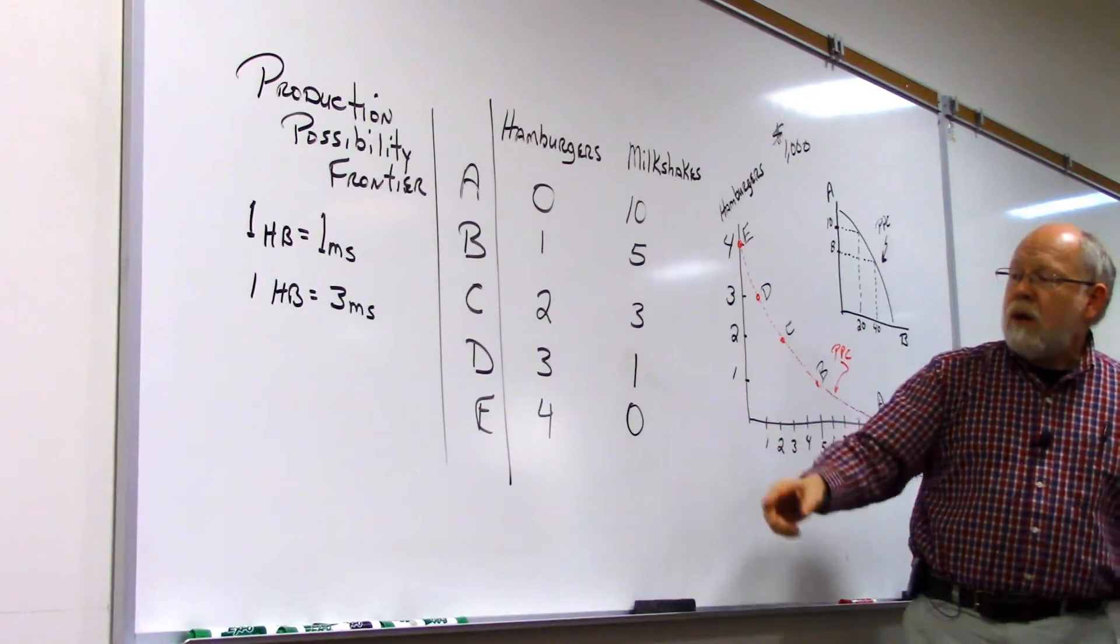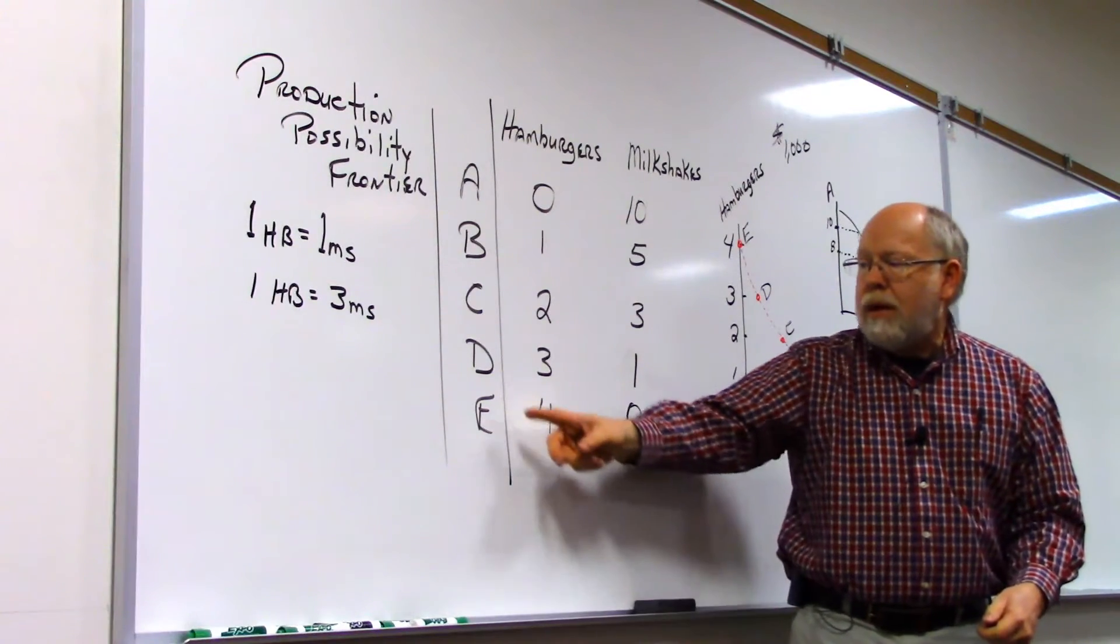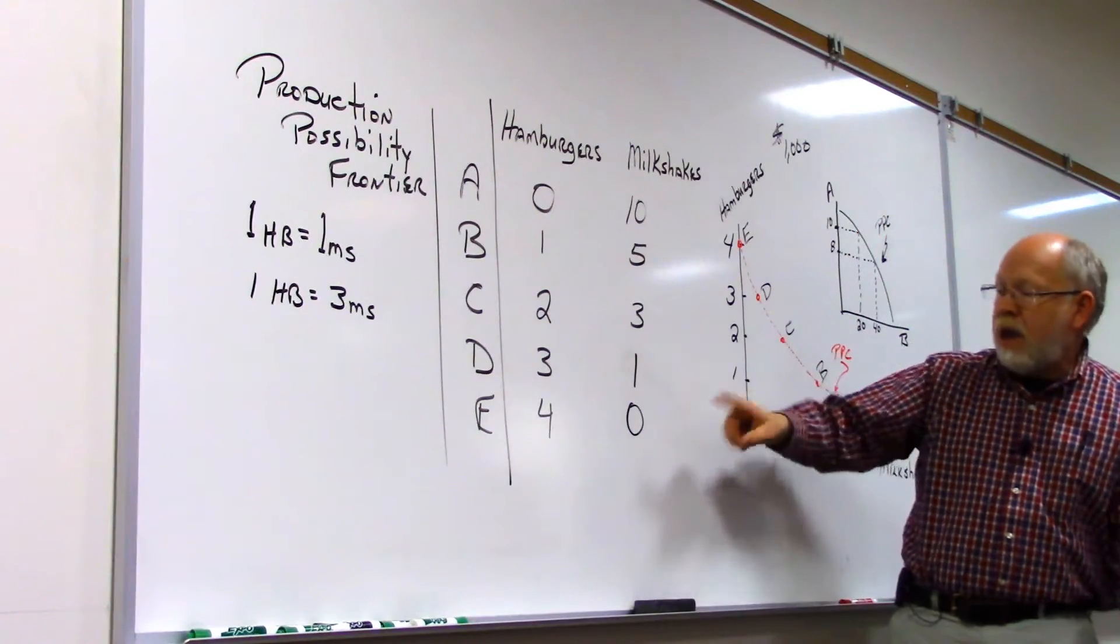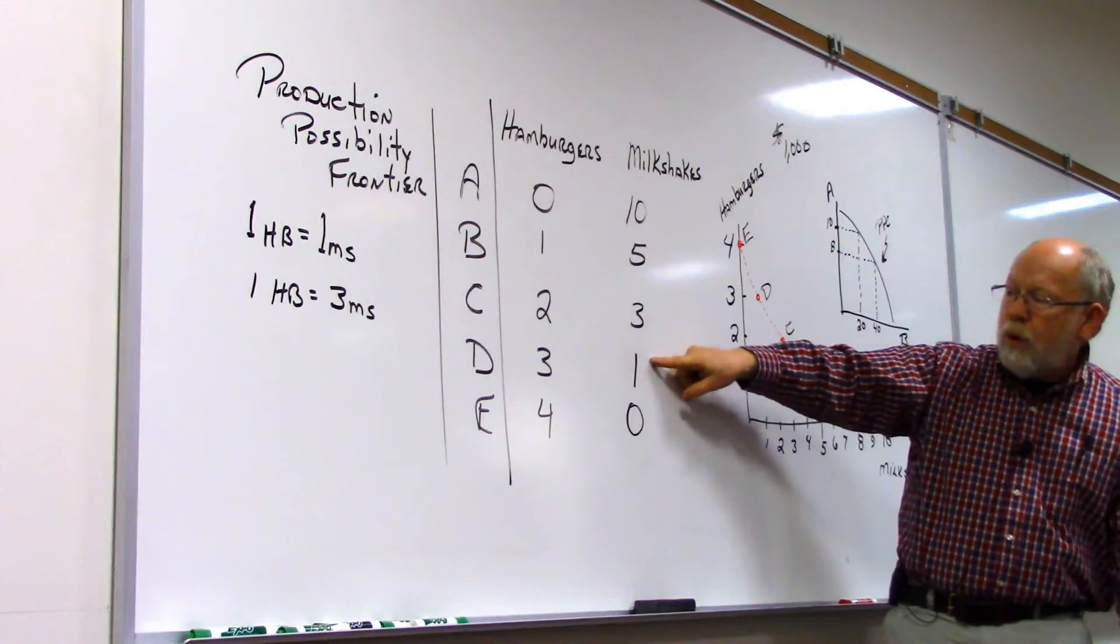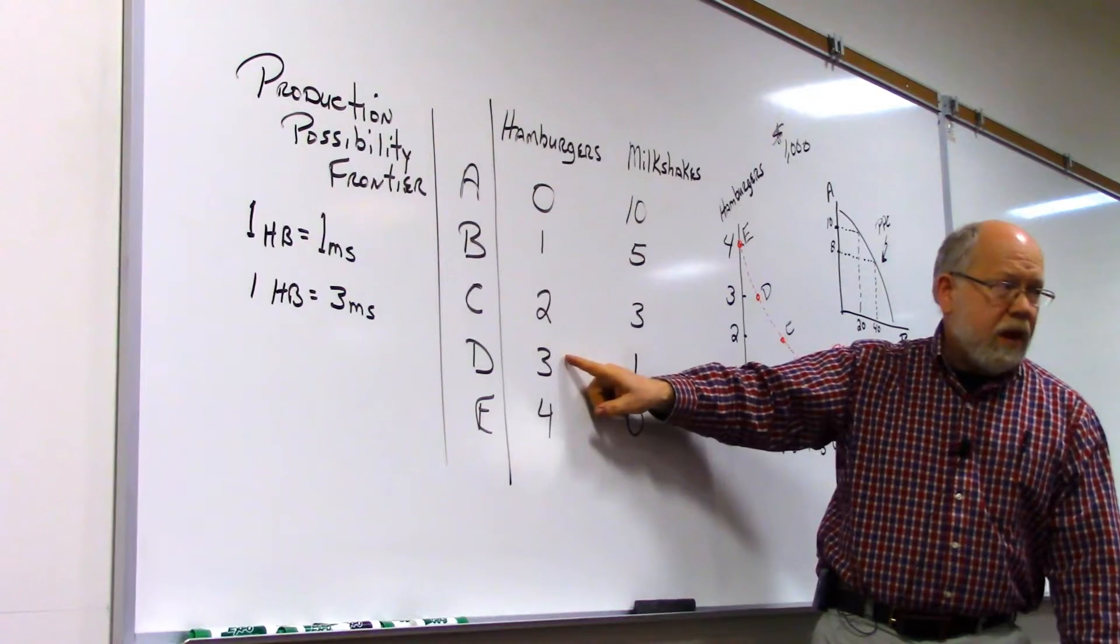Similarly, we could say, well, if we're at point E, and we want to go to point D, in other words, we have no milkshakes, and we want to produce one unit of milkshakes, we would have to give up one unit of hamburgers.